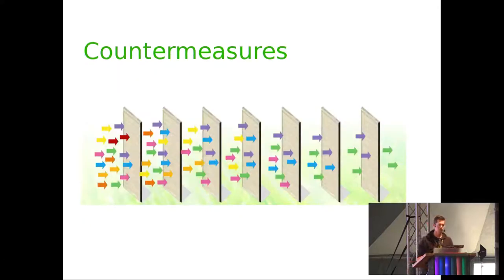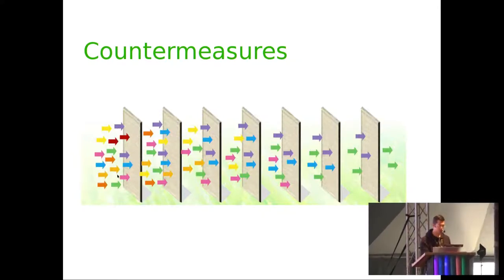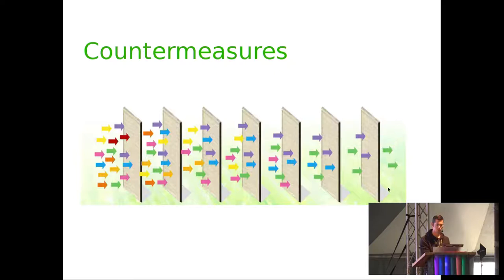For countermeasures, you typically try to filter in different layers. In the first layer, you throw away invalid packets and spoofed packets. You then apply different filters, and at the end you hopefully only get the good traffic through.